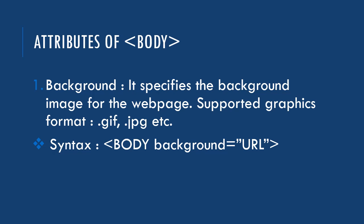The first attribute of the body tag is the background attribute, which specifies the background image for the web page. The supported graphic formats in this case are generally .gif and .jpg, which are very popular graphic formats. The syntax is: open angular bracket, type body, then mention background equals, and then mention the URL in double quotes, then close the angular bracket.